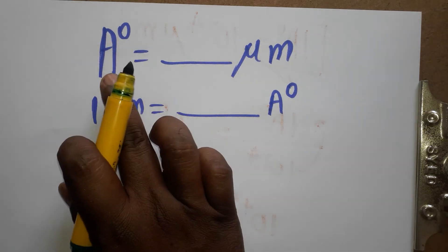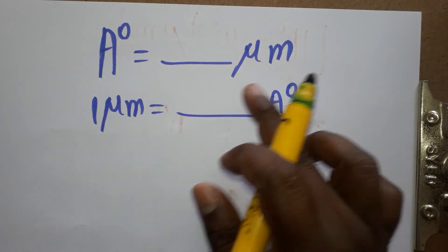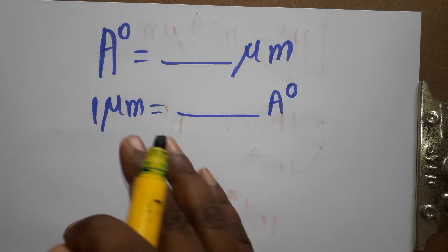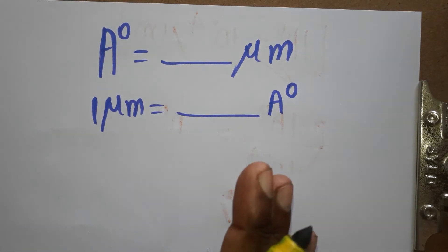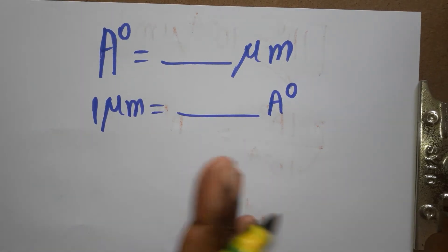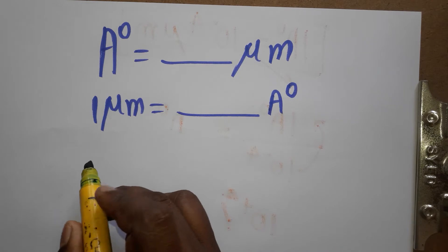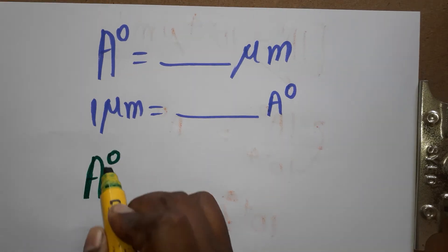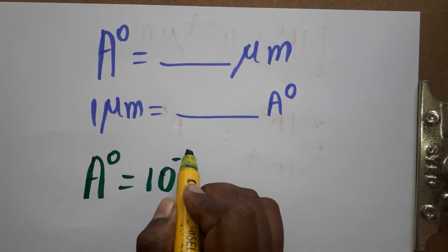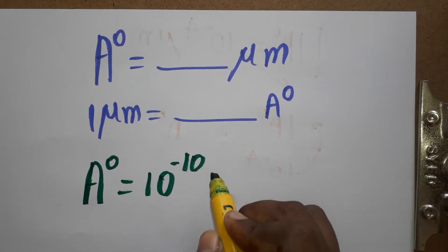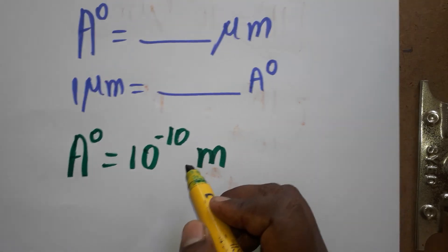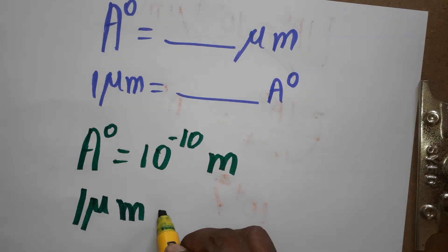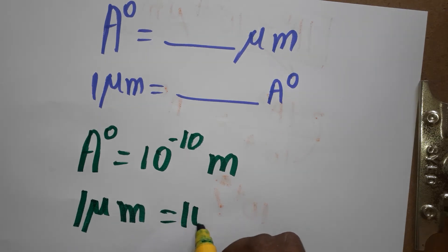Today we are going to learn how to convert from angstrom unit to micrometer and micrometer to angstrom unit. Before going to convert, you should know the base conversions in meters: one angstrom unit is equal to 10 power minus 10 meter, and one micrometer is equal to 10 power minus 6 meter.